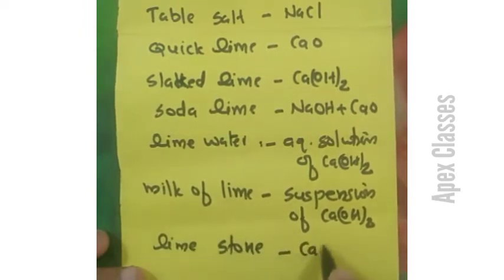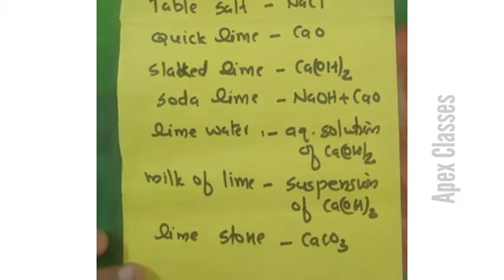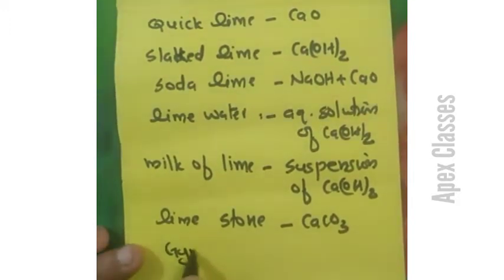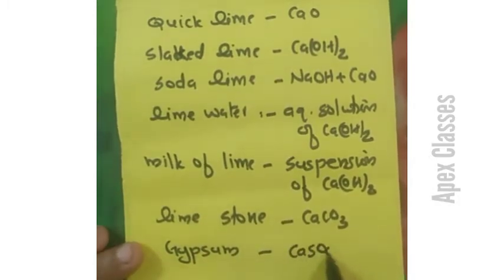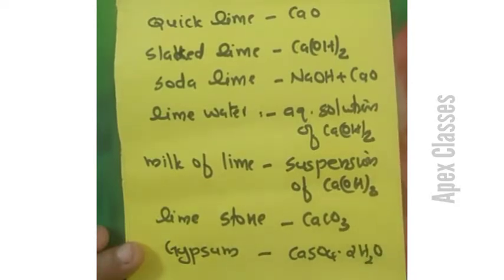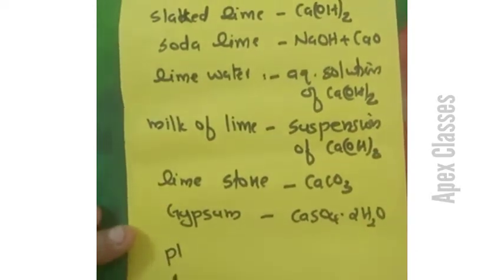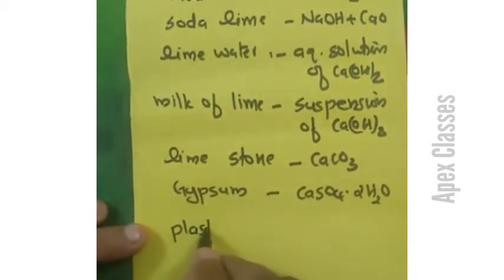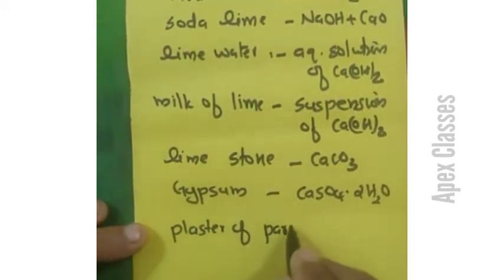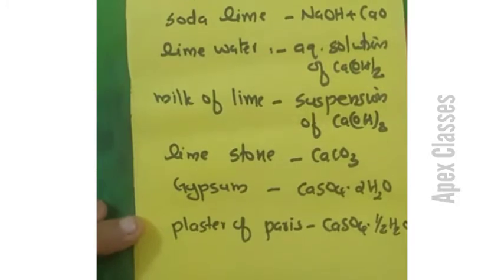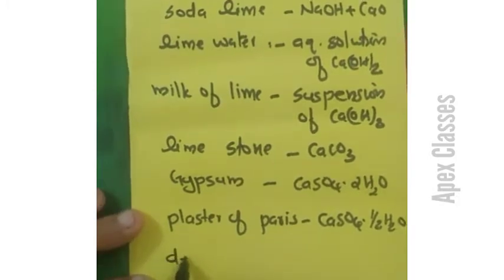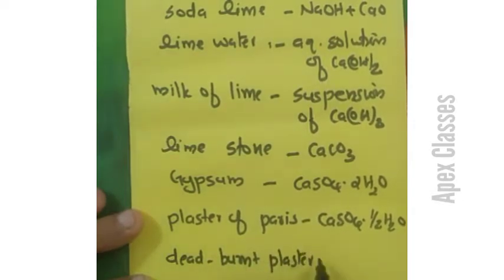Limestone is CaCO3. Gypsum is CaSO4·2H2O. Plaster of Paris is CaSO4·½H2O. Dead Burned Plaster is CaSO4.